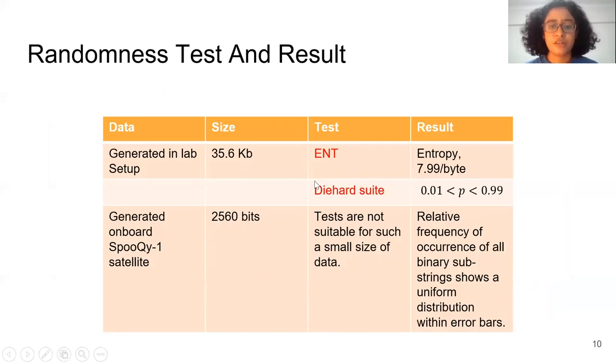Summary of our test results on the datasets. We have also run the ENT and DIEHARD suit on our lab data. These two are standardized randomness tests. Both tests have been passed by our data. For the ENT test, our entropy is 7.99 per byte, meaning out of 8 bits, our entropy was 7.99. For DIEHARD, it also passed the test.